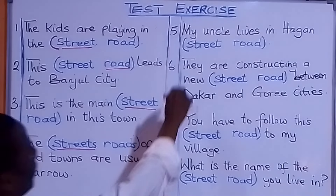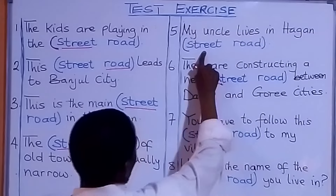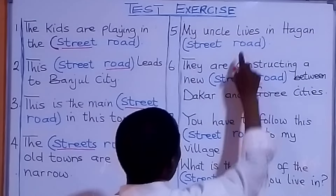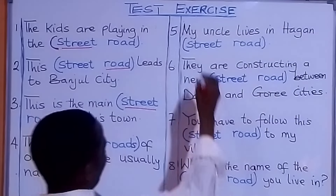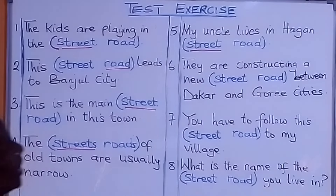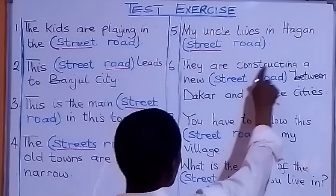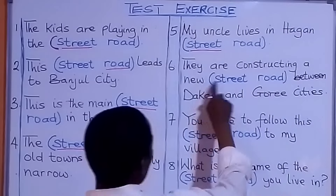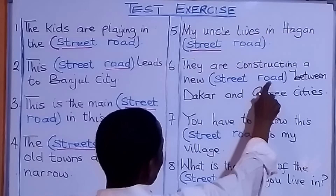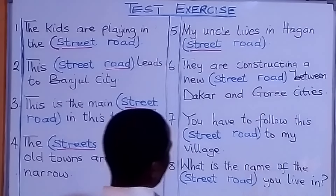Look at number five: 'My uncle lives in Hagan [Street / Road].' What are we going to put there? My uncle lives in Hagan Road. Number six: 'They are constructing a new [street / road] between Dakar and Gori cities.' They are constructing a new road between Dakar and Gori cities.